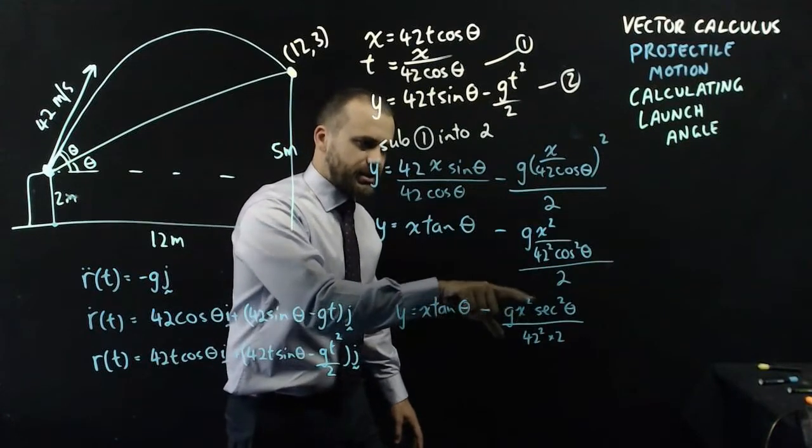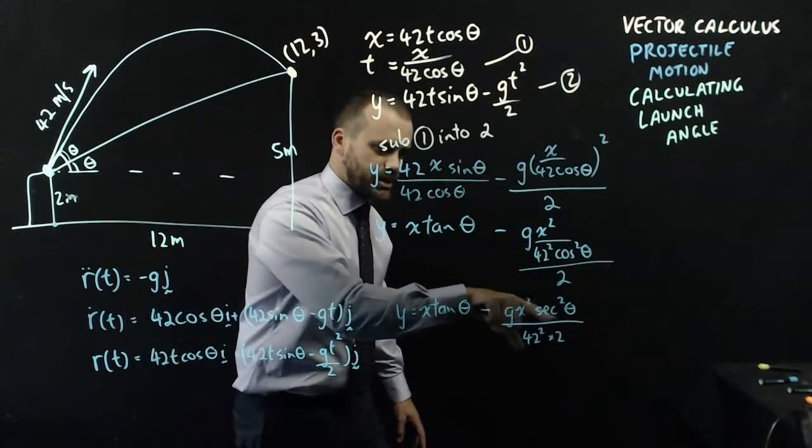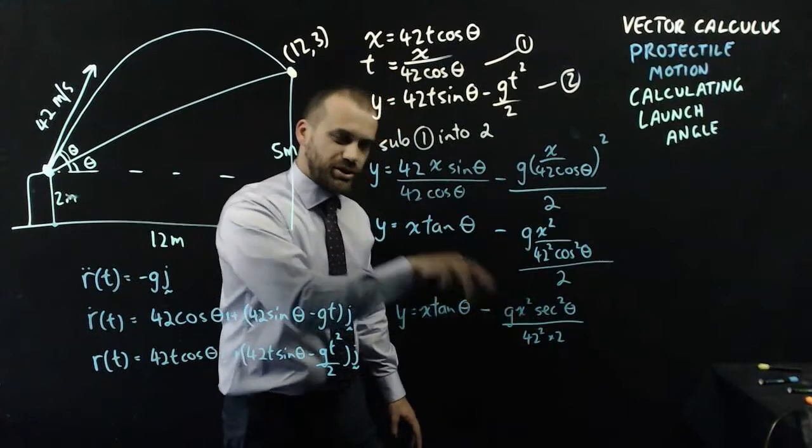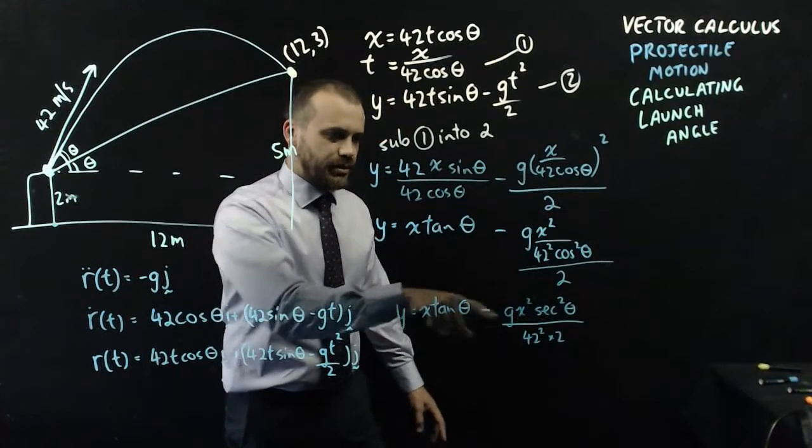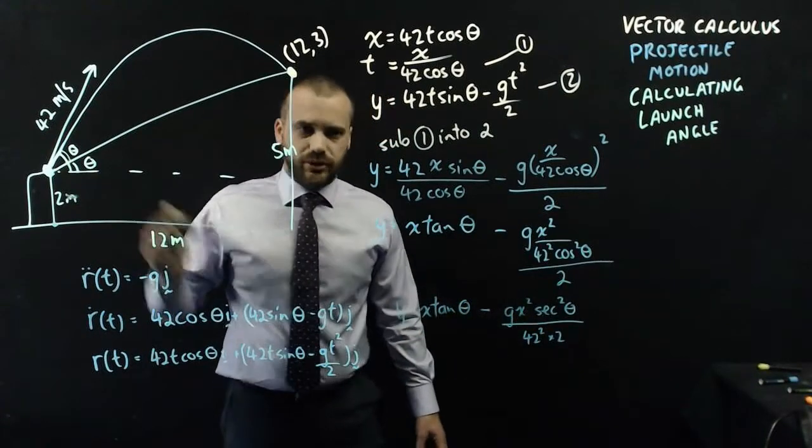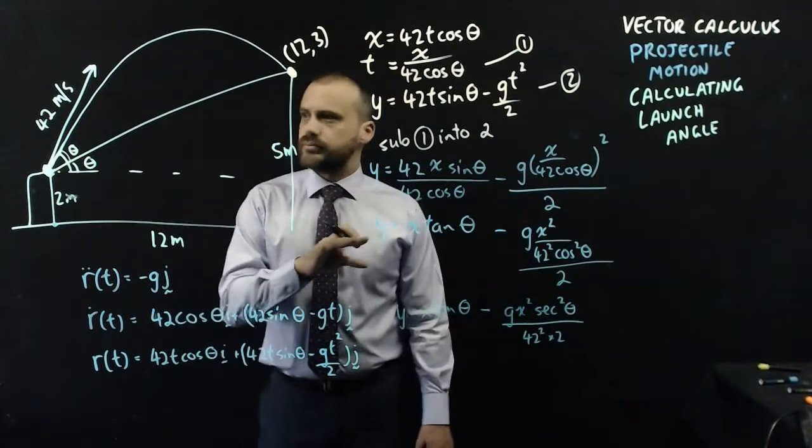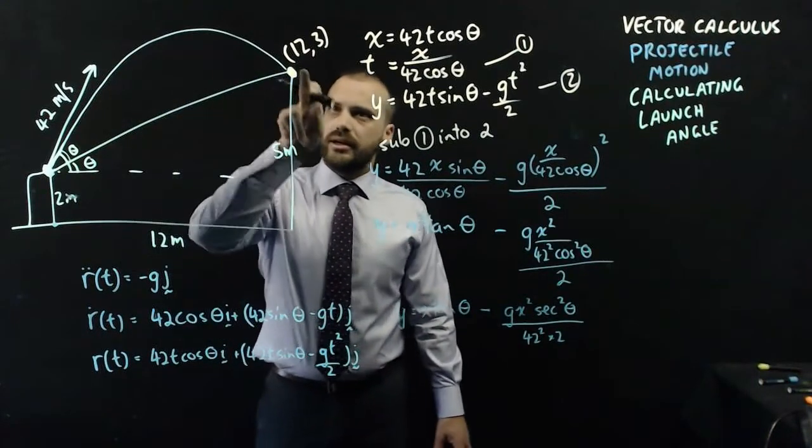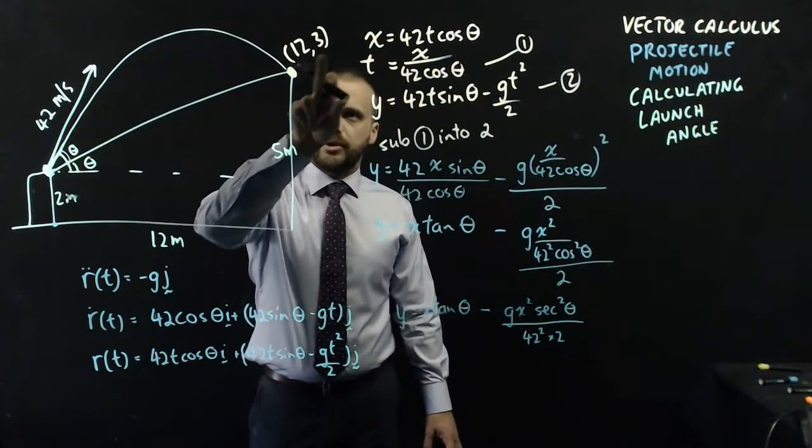And this is x squared times a number times a number over a number number. It's just x squared times a number. These are all numbers if only we knew the launch angle. All right, so I have a quadratic. It's passing through point 12, 3.